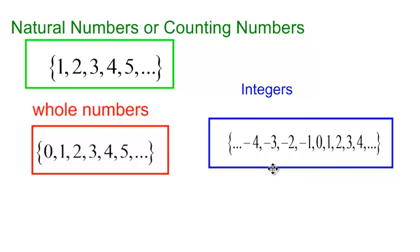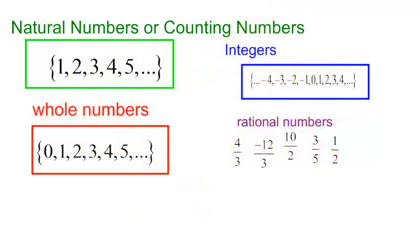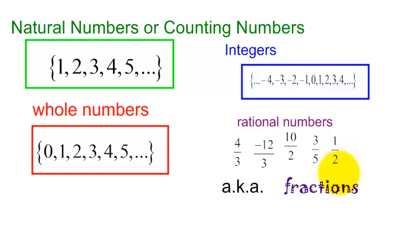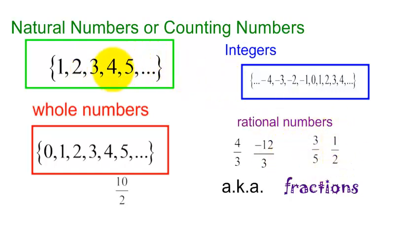Well, if you are quite the party animal, you may think the more the merrier and want the rational numbers to come. So now we are inviting the rational numbers. The rational numbers are also known as fractions — one over two, three over five, negative twelve over three. Notice that five is the same thing as ten over two. Ten divided by two is five. So the number five gets invited to the party every time because it's a natural number, a whole number, an integer, and a rational number, also known as a fraction.